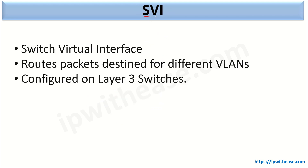SVI is an abbreviation for switch virtual interface and it can be configured on a layer 3 switch. The feature of SVI is that it routes packets which are destined for different VLANs. On a layer 2 switch, one VLAN cannot communicate to another VLAN directly and requires the help of any layer 3 device or firewall as an external entity. In the next slide, we will configure SVI on a layer 3 device and see if inter-VLAN routing can be performed within that switch itself.